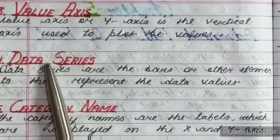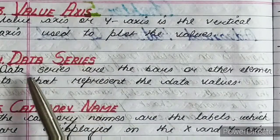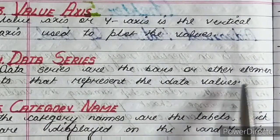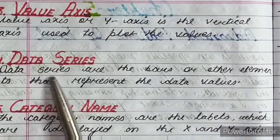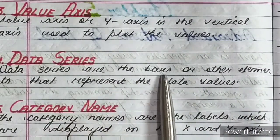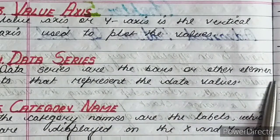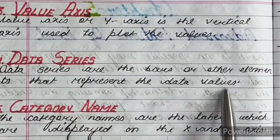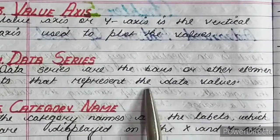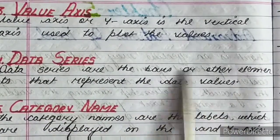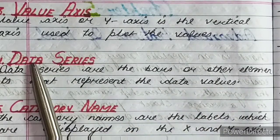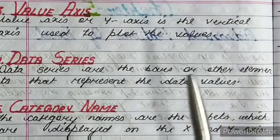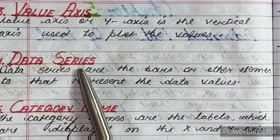Next is data series. Data series are the bars and other elements that represent the data values in a chart. जो आपके bars होते हैं या other elements होते हैं जो data values represent करते हैं, उनको data series बोलते हैं.